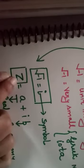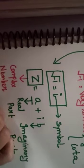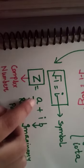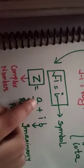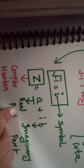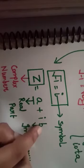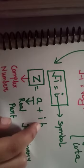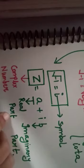Complex number ko hum represent karenge capital z se. This complex number is combination of real part plus imaginary part. Yahan dekhiye, yeh small a likha hai. Ismein i nahi hai. Yeh real part hai, without i hai, real part hai, plus iota b. B real number hai but i multiply ho gaya b ke saath, to b imaginary part hai. A real part hai, b imaginary part hai.